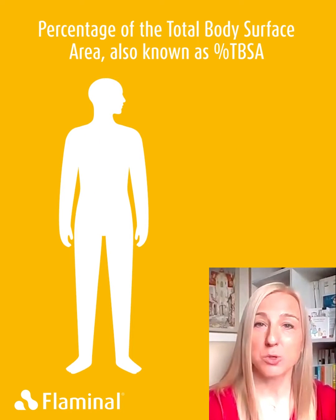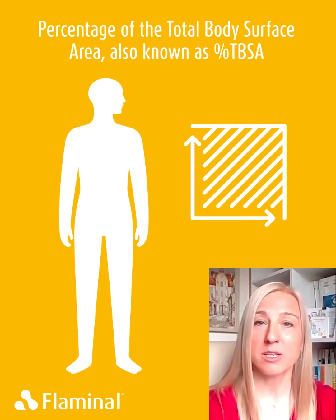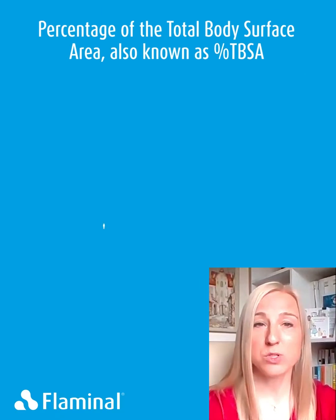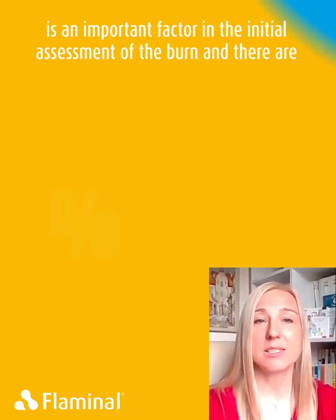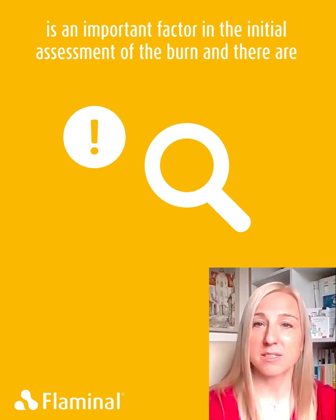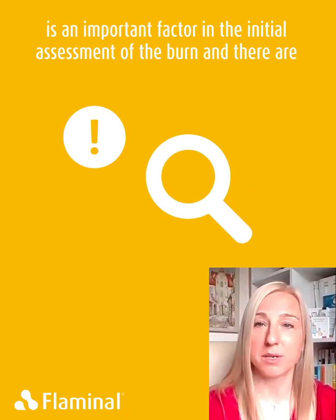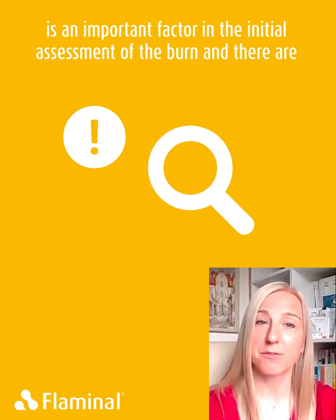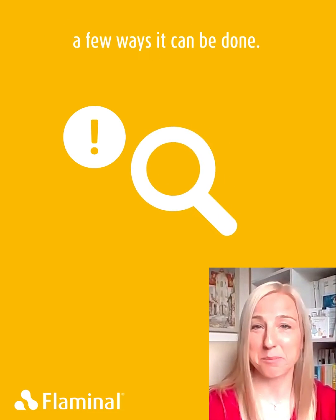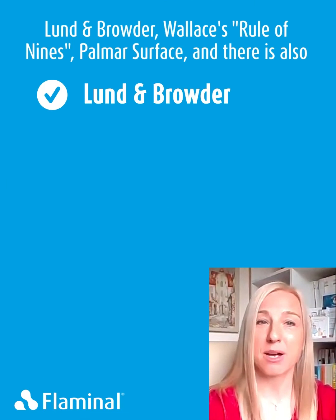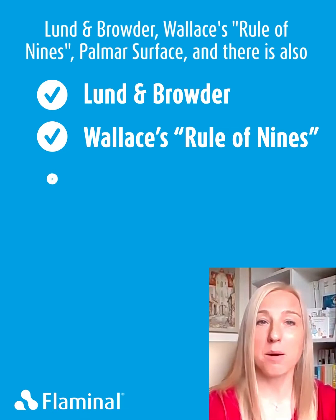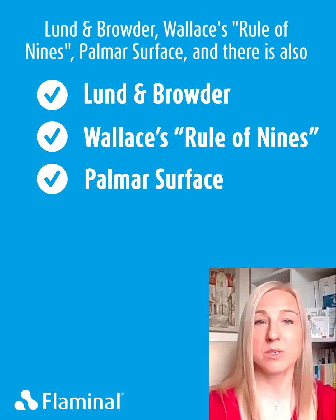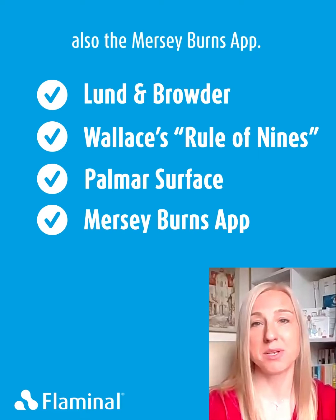Percentage of the total body surface area, also known as percentage TBSA, is an important factor in the initial assessment of the burn, and there are a few ways it can be done: Lund-Browder, Wallace's rule of nines, Palmer surface, and there is also the Mersey Burns app.